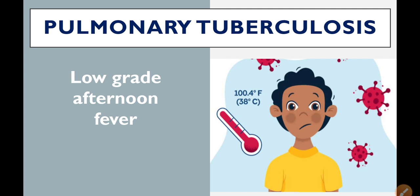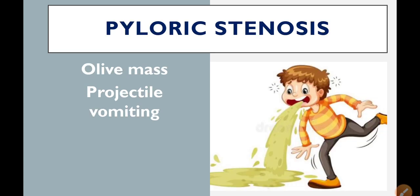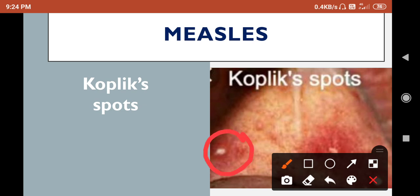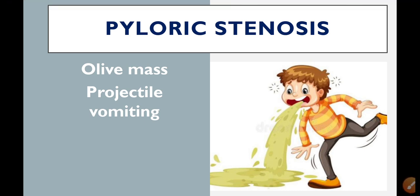Low-grade afternoon fever is the primary clinical manifestation that helps with the diagnosis of pulmonary TB. Next: measles, which I think is the easiest one. Koplik spots over all the oral mucosa is the primary symptom of measles. If a person is affected with measles, during oral examination you will see whitish spots on the oral mucosa called Koplik spots, with reddish swelling around them. Here you can see the white spot and the inflammation around it.